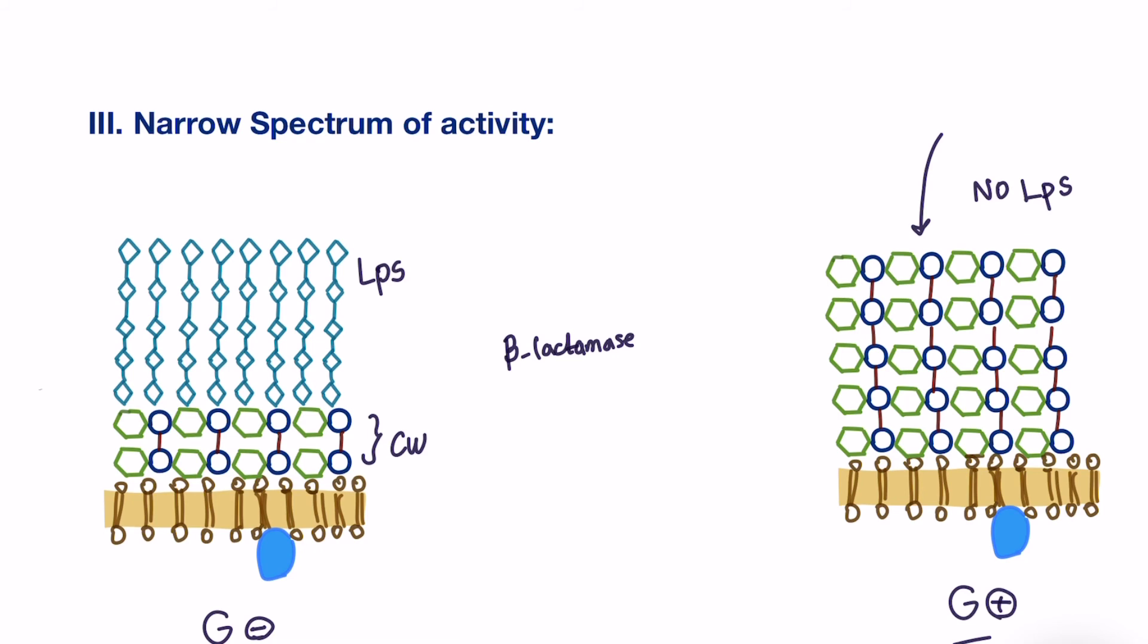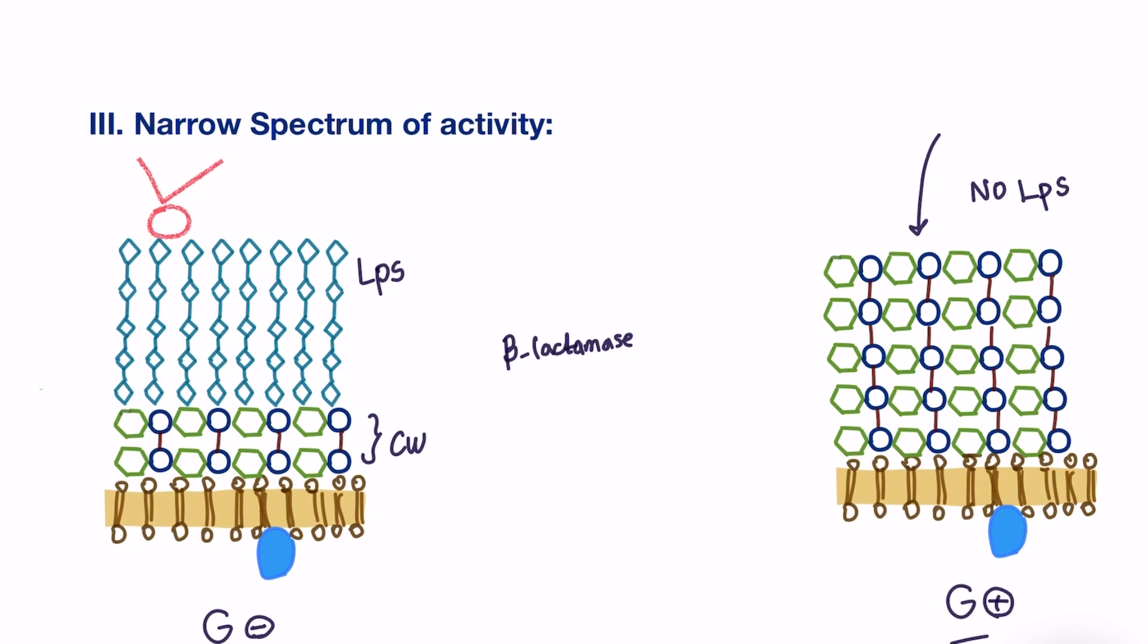Finally, we have an efflux system, which is found on the outer layer of gram-negative bacteria. It's a protein that blocks penicillin from entering. So it's pumped out outside the cell, and thus it can't reach the cell wall. However, gram-positive has no efflux system, making the penetration of penicillin much easier.